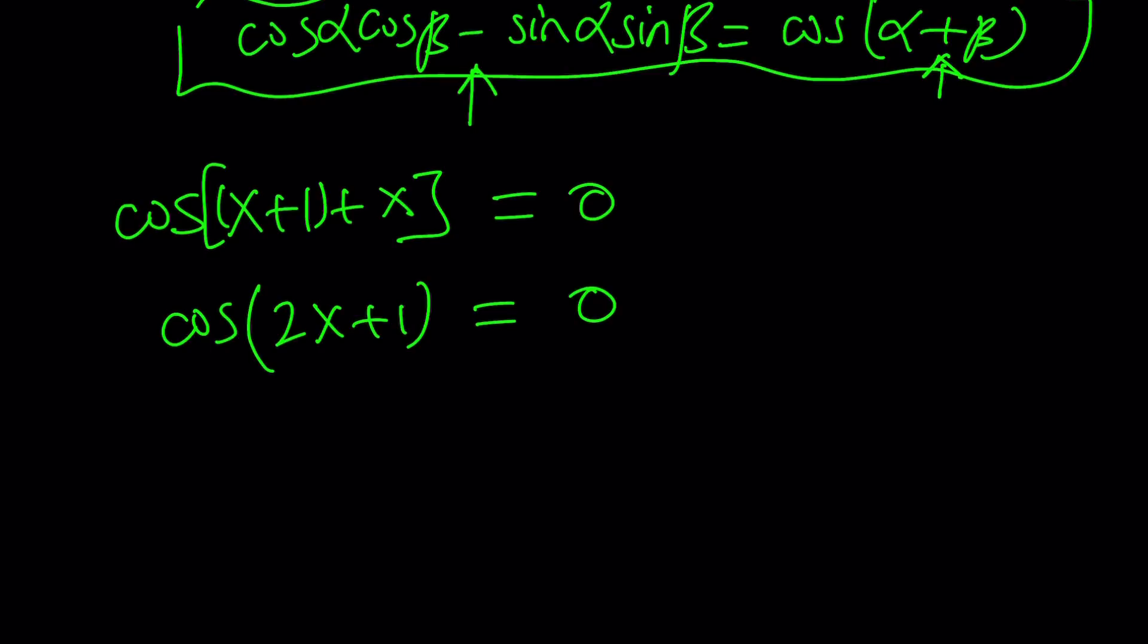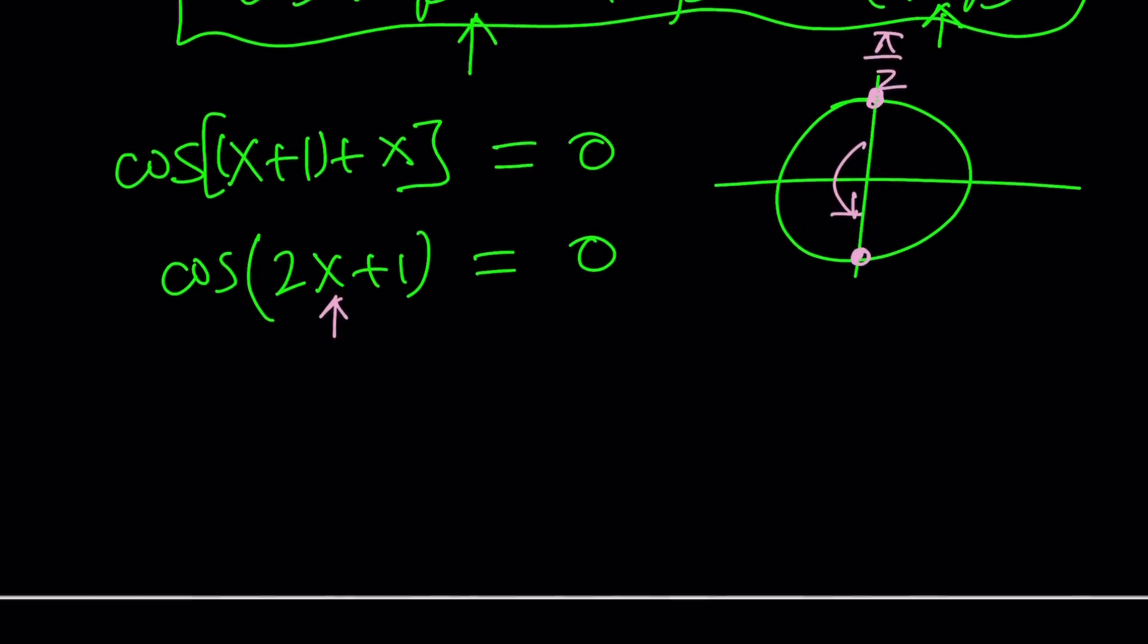And just think about the cosine of which angle is 0. Well, you're going to find two angles. One of them is pi over 2. The other one is negative pi over 2 or you can express it as 3 pi over 2. But, you can start at pi over 2 and then just add multiples of pi to it.